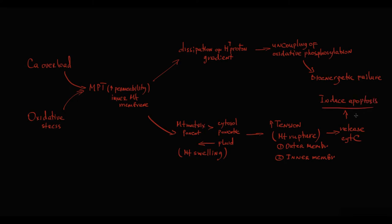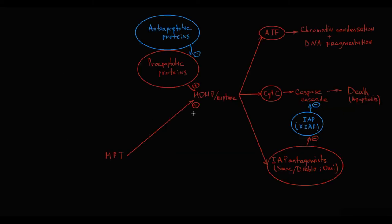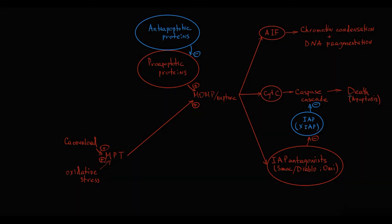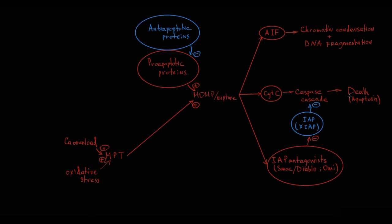So calcium overload and oxidative stress can induce mitochondrial permeability transition, which subsequently results in rupture of the mitochondrial outer membrane. With disruption of the outer mitochondrial membrane, cytochrome C is released into the cytosol, where it triggers apoptosis — this is the intrinsic apoptotic pathway itself.